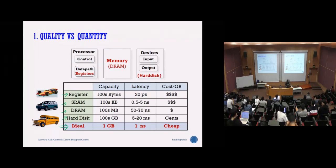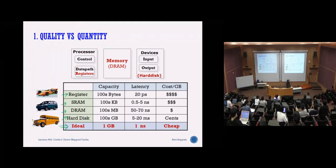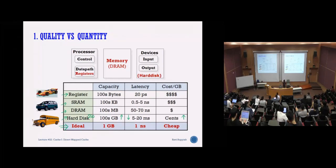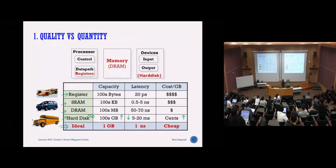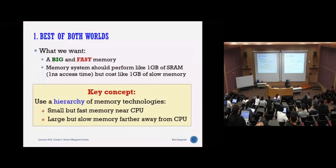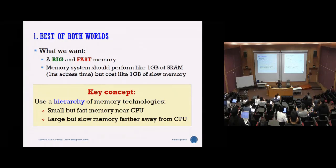Regarding solid state drives in the memory hierarchy — SSD has high capacity and lower latency than spinning disks, but the cost is still very high. SSD is also a form of storage with high capacity but currently still expensive. When manufacturing processes improve, the price goes down, and more consumers have access. Effectively, what we want is a big memory that is also very fast, but that is not possible throughout the whole system, so we need a hierarchy.